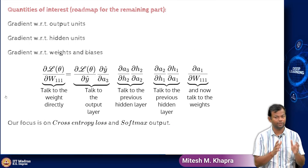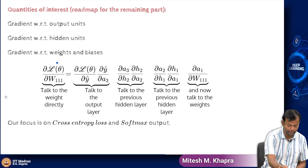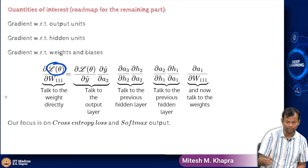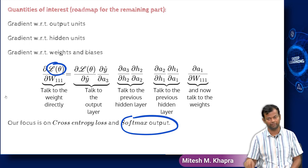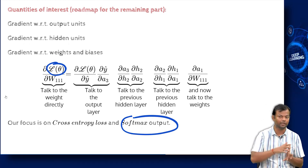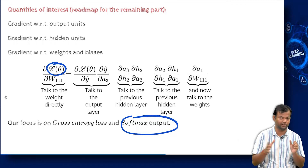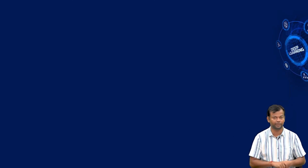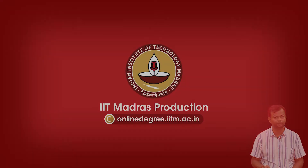Our focus is going to be on cross entropy as the loss function, which means we are going to deal with classification problems, which means we are going to have the output function as softmax. So I will end here and we will come back and do the entire back propagation in the gory mathematical details in the subsequent lectures. Thank you.